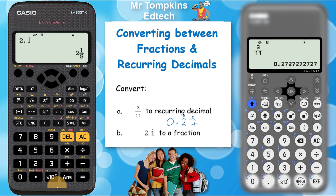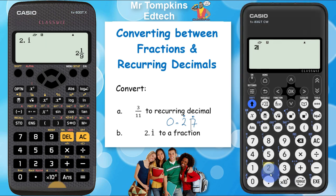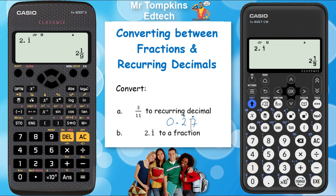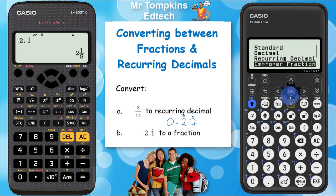On the new Casio calculator, press 2 first, then the decimal point. The square with a little dot is above the square button — press shift to access it, type in the one, then press execute. That gives the result as a mixed number straightaway: 2 and 1 ninth. To get it as an improper fraction, press the format key and select that option from the list to get 19 over 9.